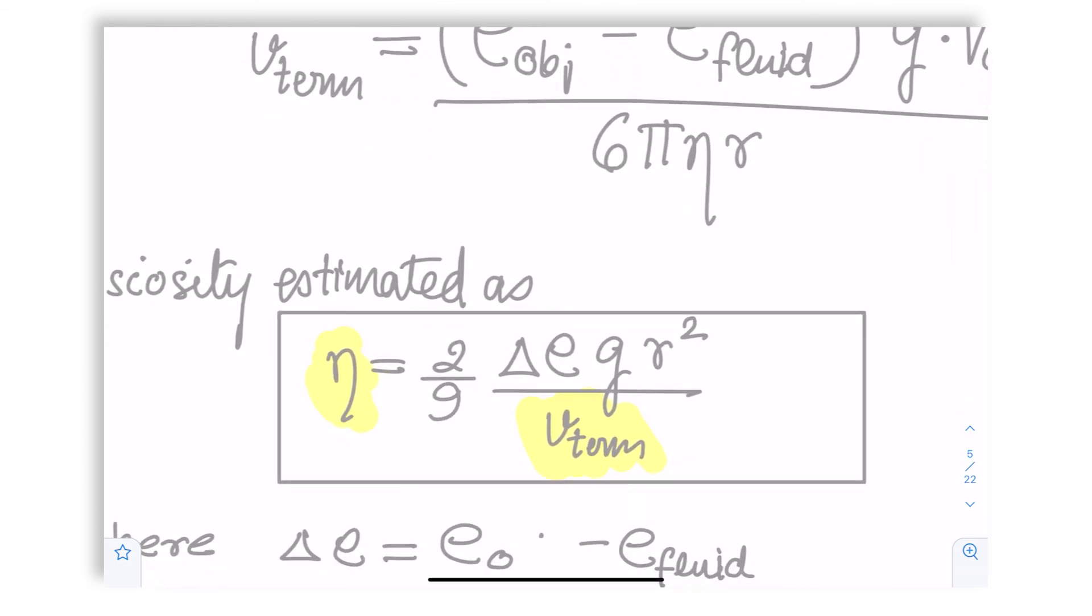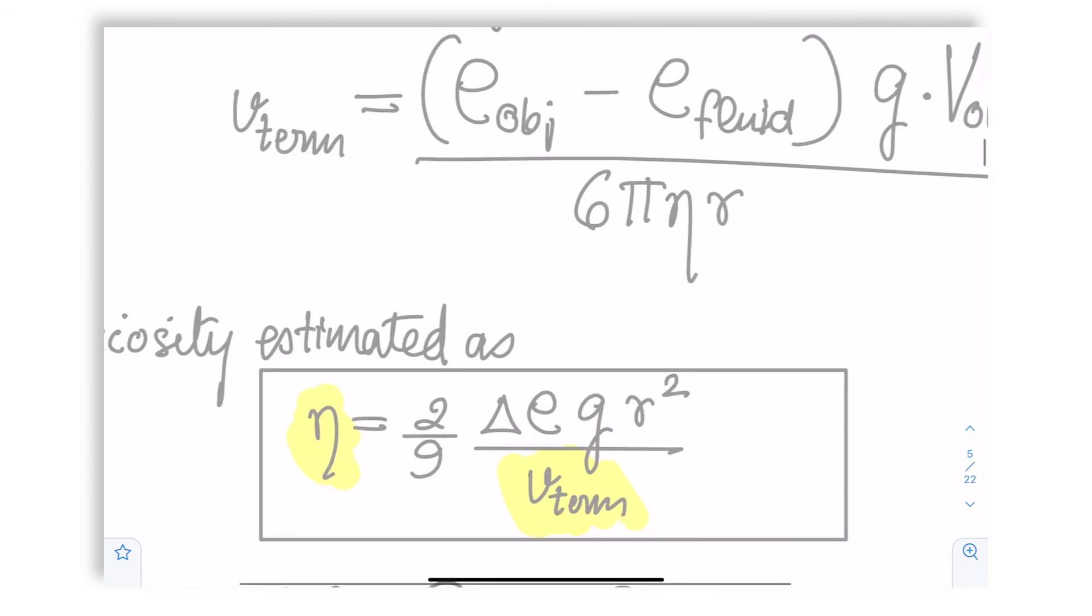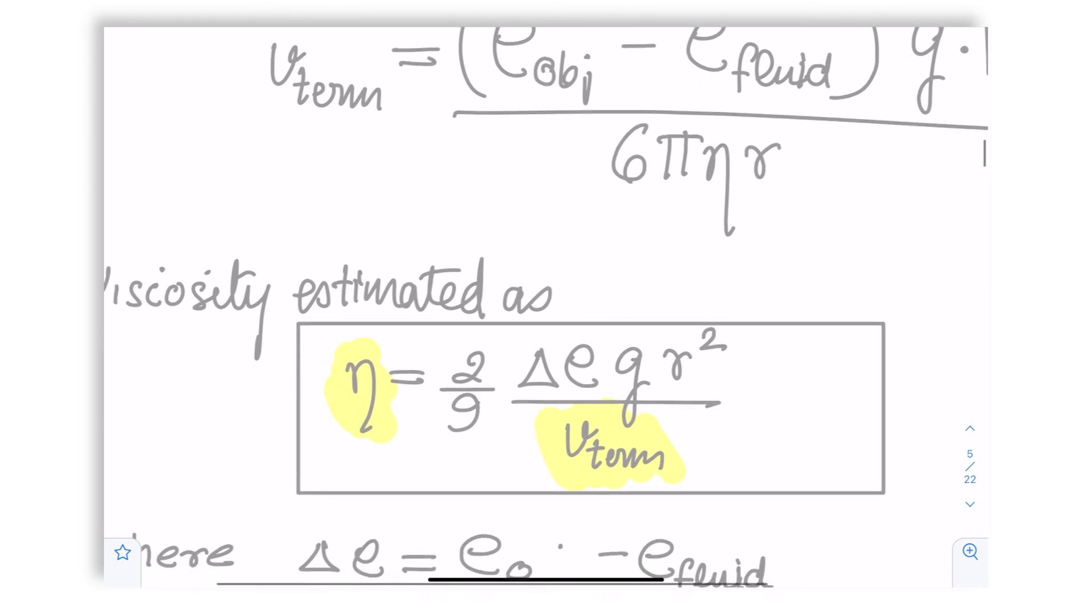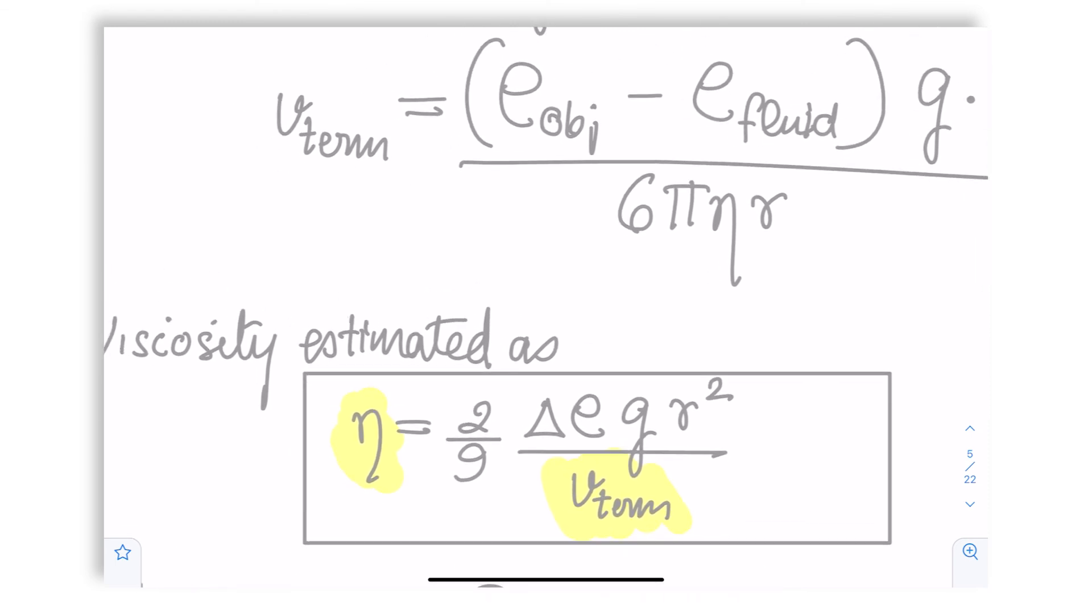Now remember, we wanted to estimate viscosity, so we rearrange terms. And we get eta is equal to 2 by 9 into delta rho, the difference between the object and the fluid density, into g into r square upon terminal velocity. Important to note that at this point we can measure experimentally or know in advance the density of the object. Let's say we take a steel ball—this is well known. We know the density of the fluid because we can measure weight per unit volume. That's what density means. We know gravitational acceleration thanks to almost 200 years of physics. We know the size of the object, that gives us r square.